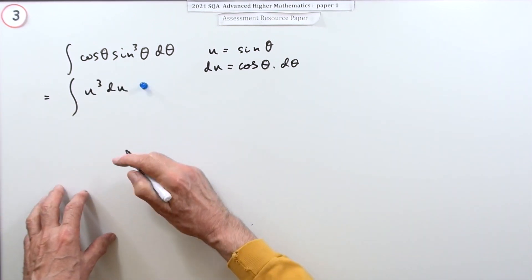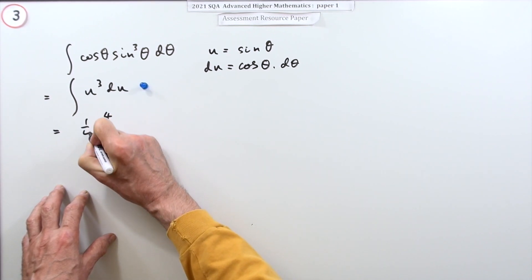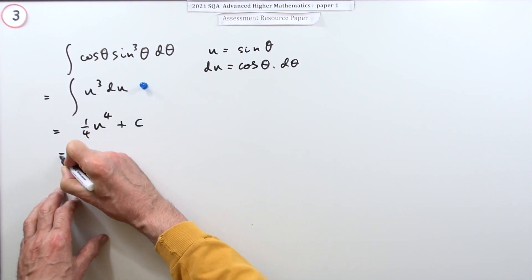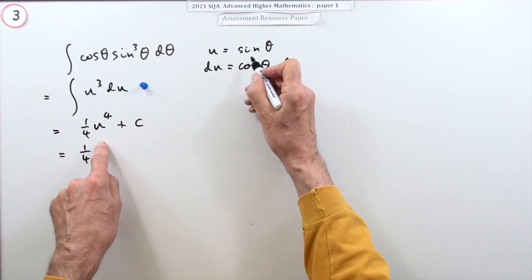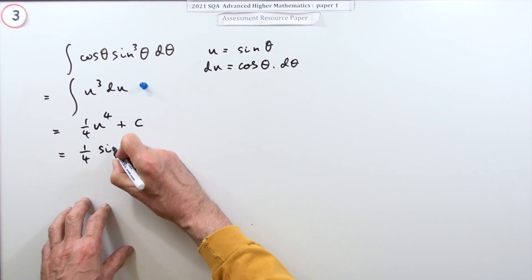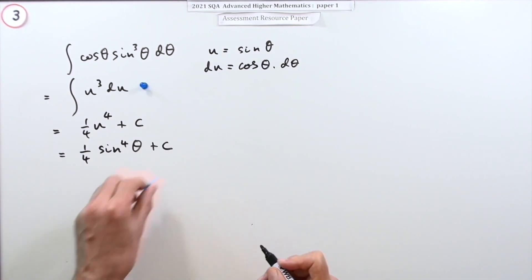First mark, then finish it off. So u to the four divide by four, and don't forget plus c. And put it back the way it was—it wants it back in terms of theta. So u was sine theta, so u to the four is sine to the four theta plus c, and there it goes.